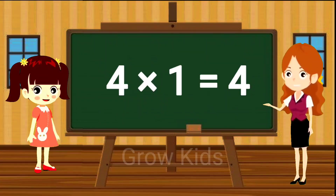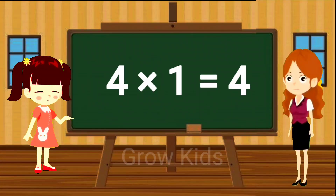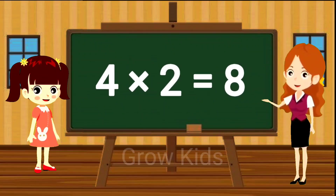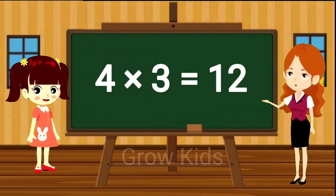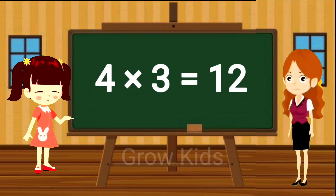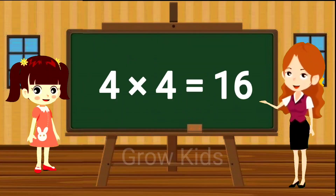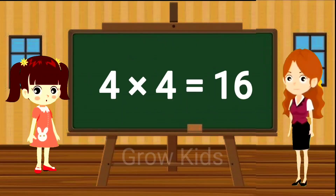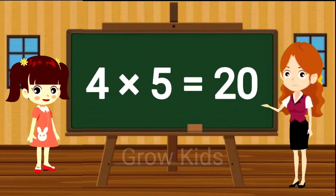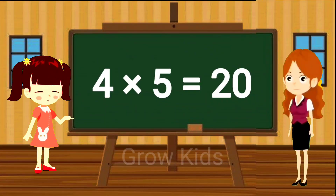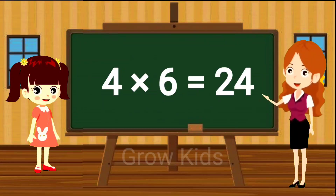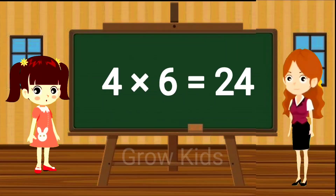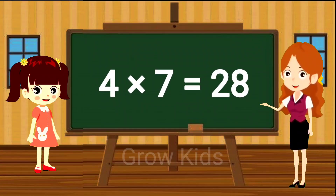Four ones are four. Four twos are eight. Four threes are twelve. Four fours are sixteen. Four fives are twenty. Four sixes are twenty-four.